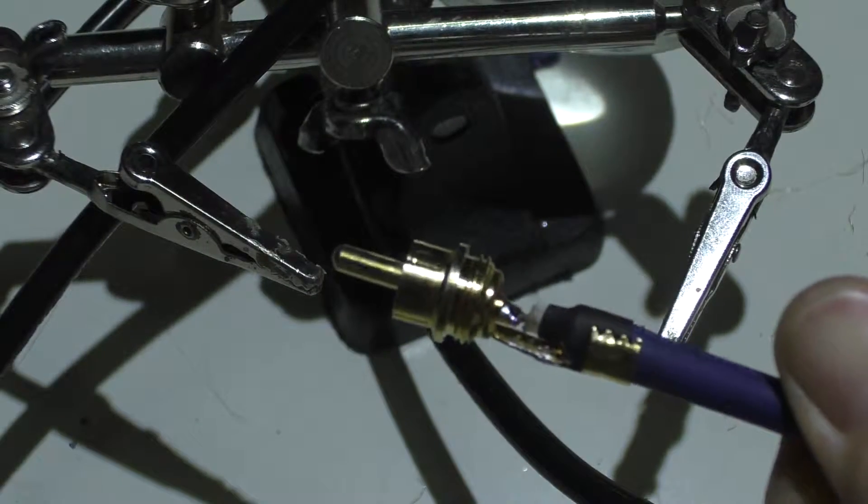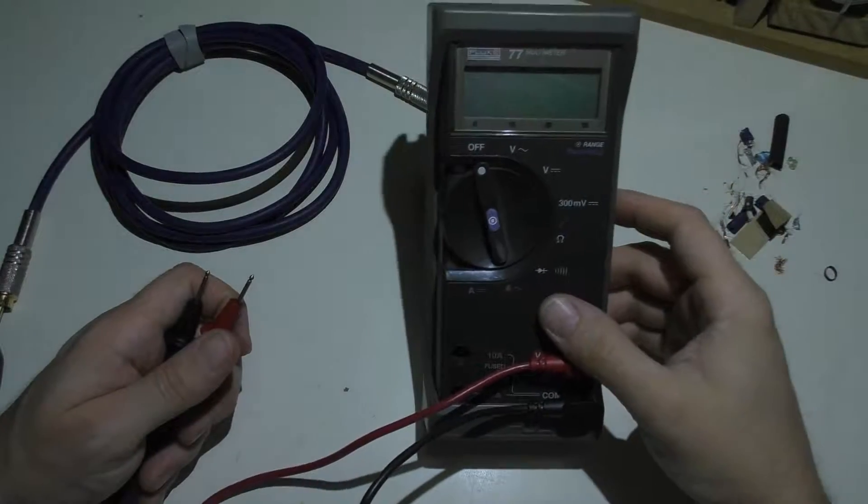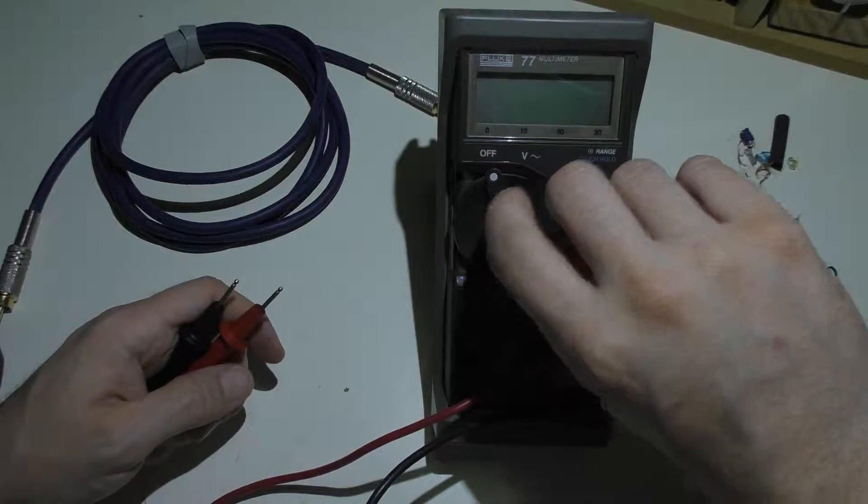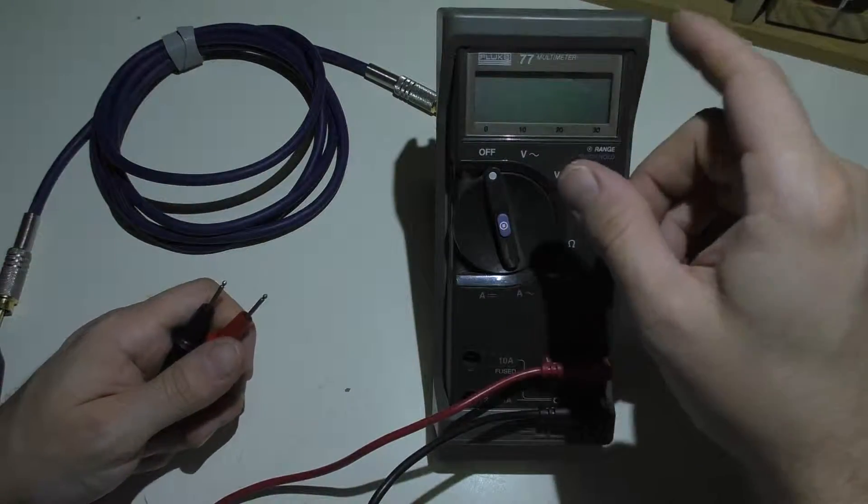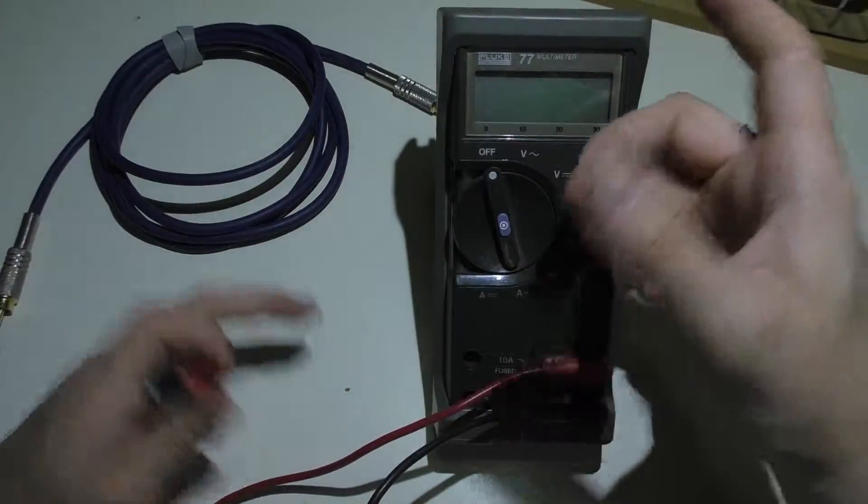All right, and the final thing to do is just this quick test. We're just going to use the fluke meter here to do a continuity test on it and making sure the pins connect to each other and the shields connect to each other. But the pin and the shield doesn't connect. So we'll set this over here to continuity, which we'll confirm by getting tone over here.